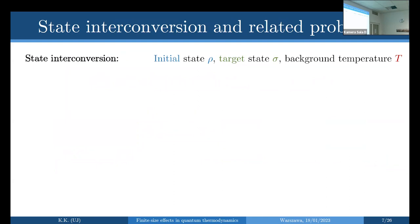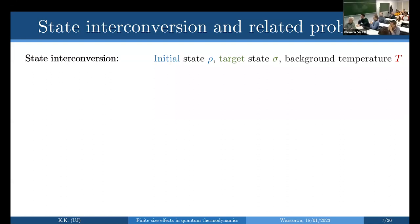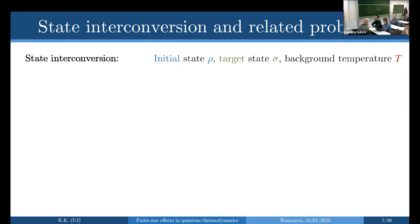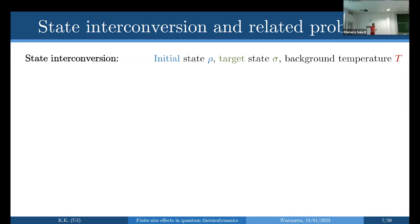In this setting, the important problem people study is the state interconversion problem: you start with an initial state ρ, you have some target state σ, and you ask: can I get there by interacting with a heat bath at temperature T? This is illustrated on the previous slides. The temperature is defined by the heat bath, which in the typical experimental setup is itself in contact with a larger reservoir.